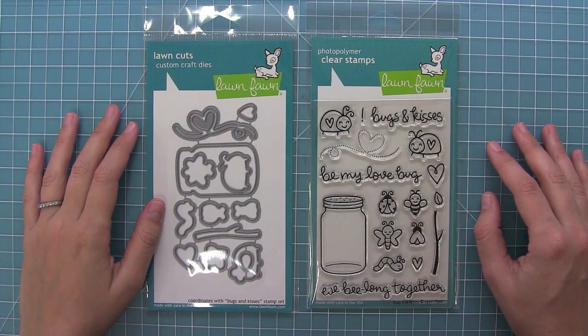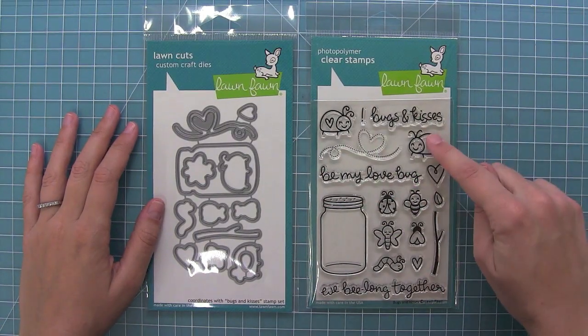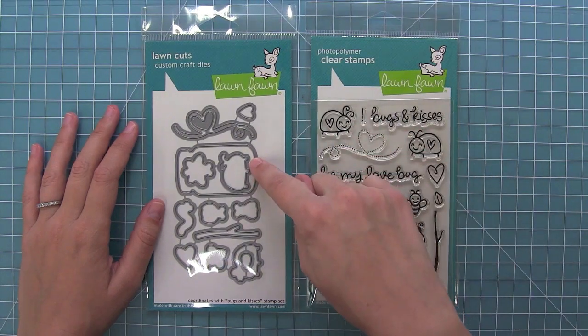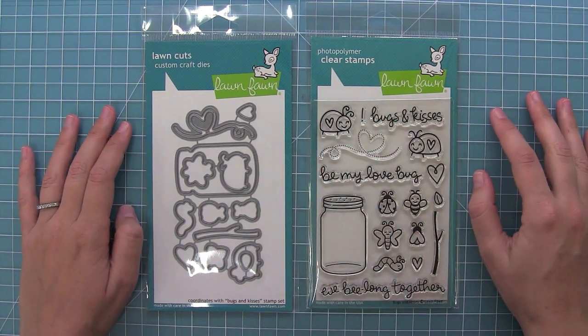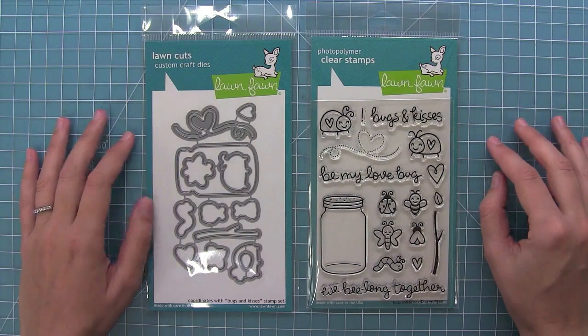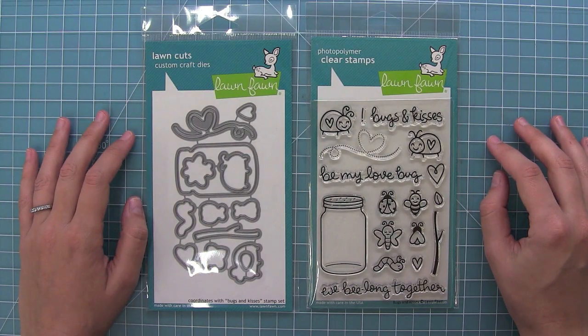Hello and welcome to another Lawn Fawn video. Today we are introducing our new set Bugs and Kisses and its coordinating dies. I love this adorable set for Valentine's Day and for all year round. So let's go ahead and stamp it out.